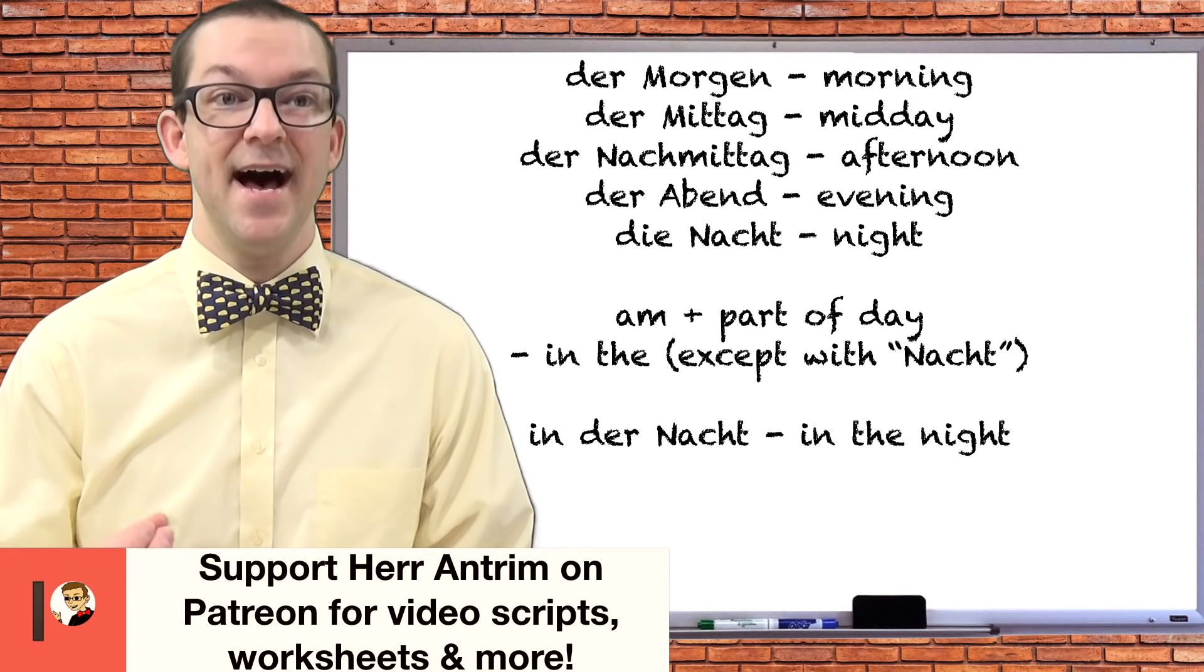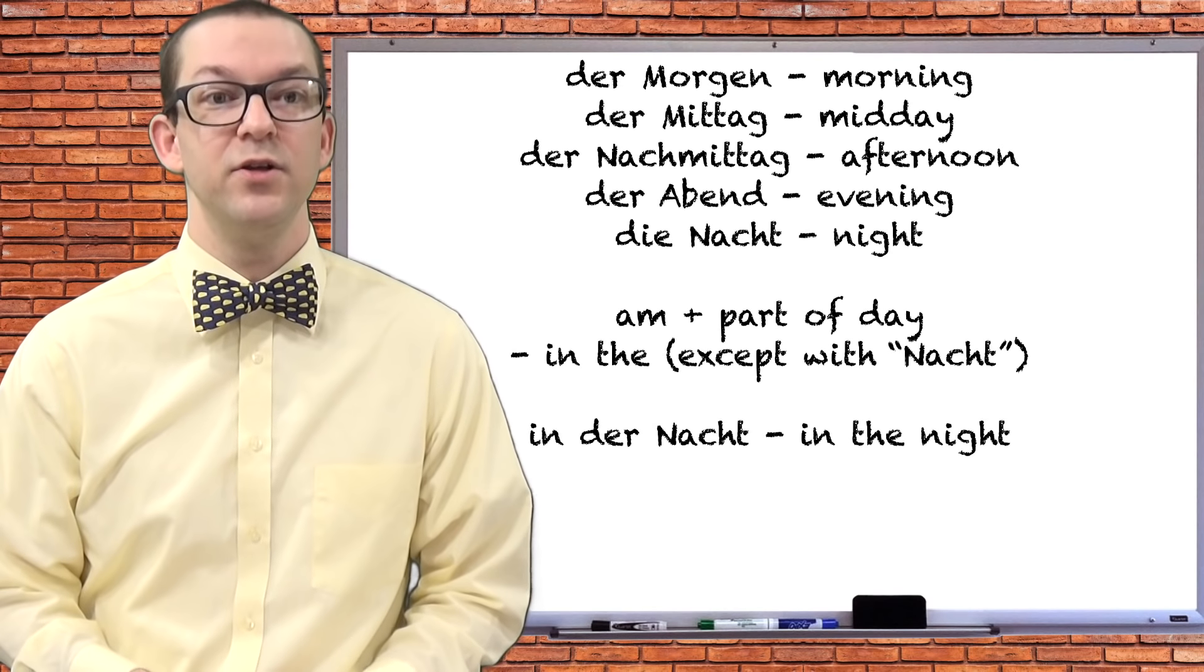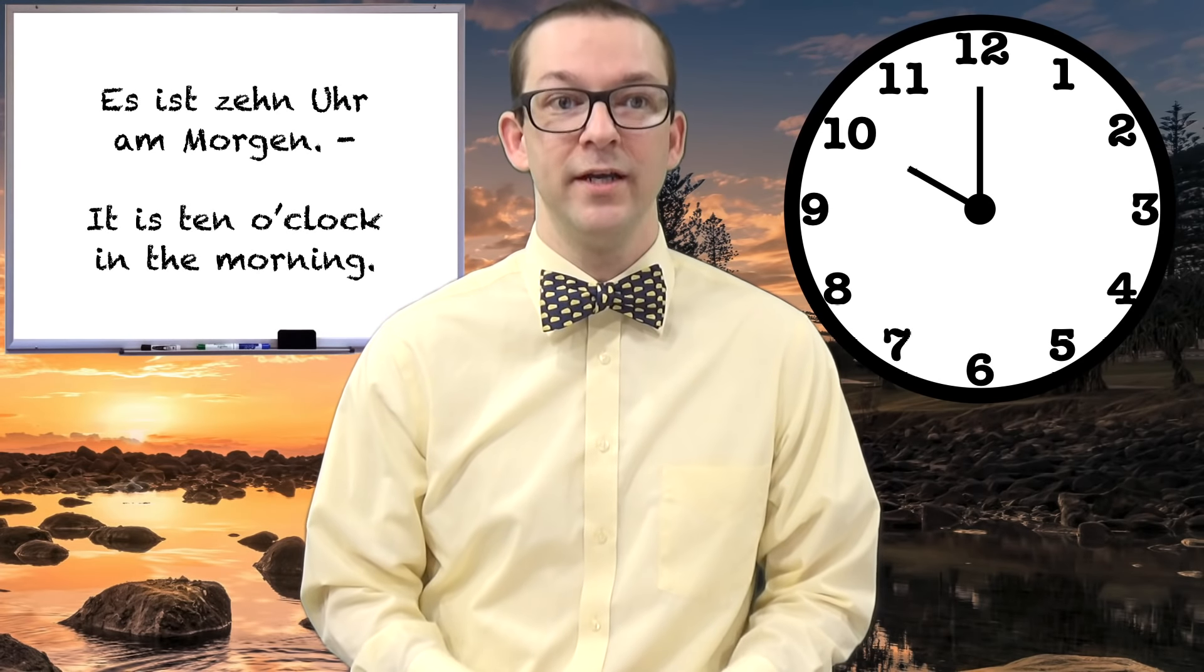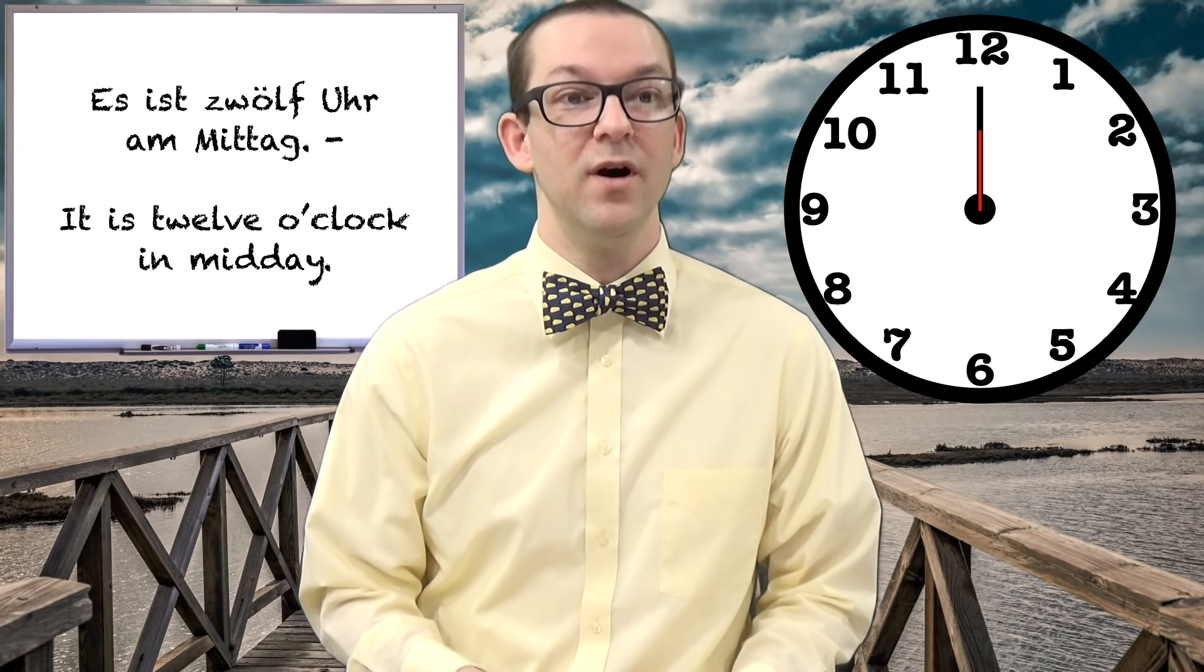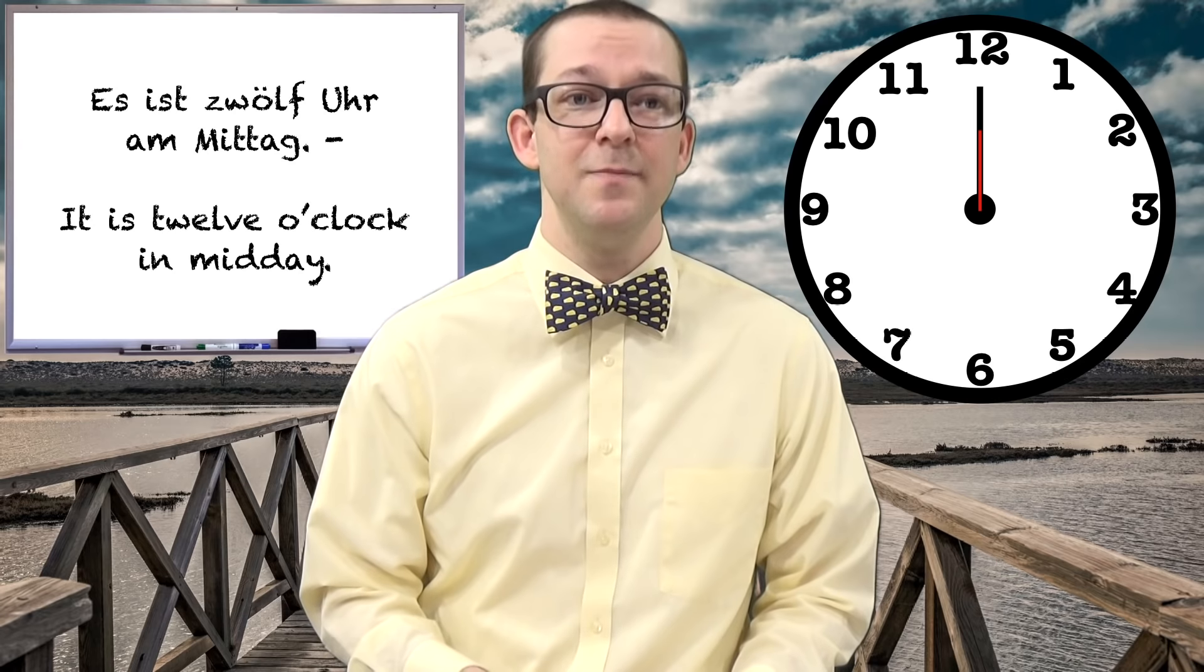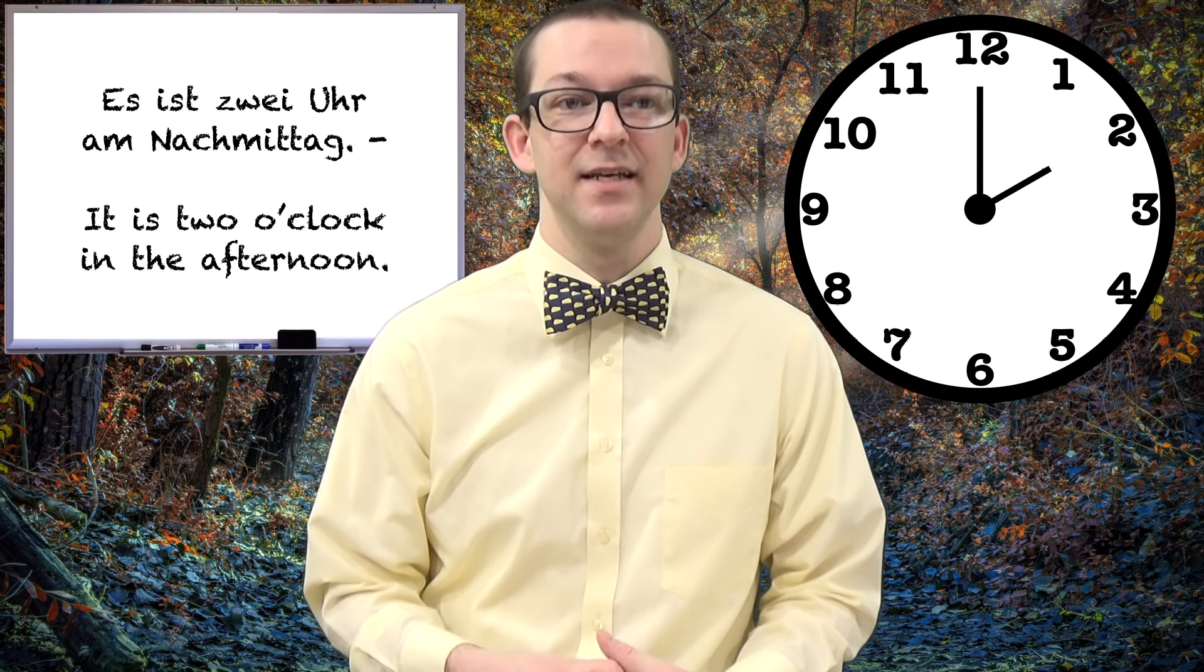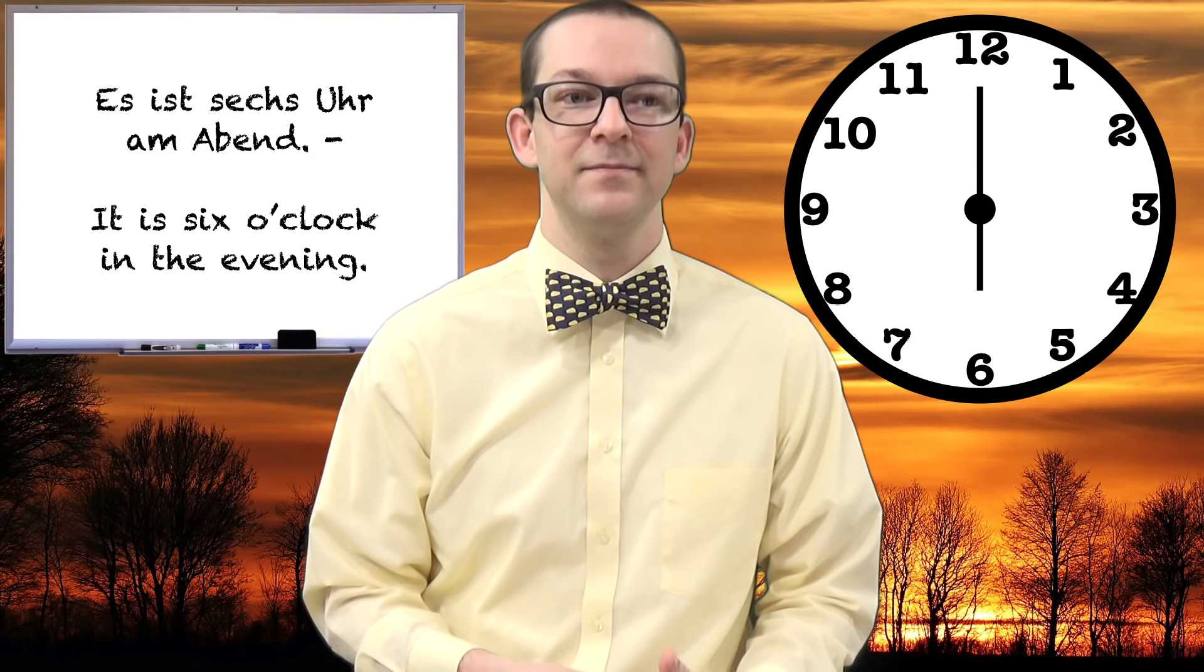The only exception to that is nacht, which requires you to switch to the phrase in der Nacht. Here are a few examples of how to use these expressions in a sentence. Es ist zehn Uhr am morgen. It is ten o'clock in the morning. Es ist zwölf Uhr am Mittag. It is twelve o'clock in midday. Es ist zwei Uhr am Nachmittag. It is two o'clock in the afternoon. Es ist sechs Uhr am Abend. It is six o'clock in the evening. Es ist zehn Uhr in der Nacht. It is ten o'clock at night.